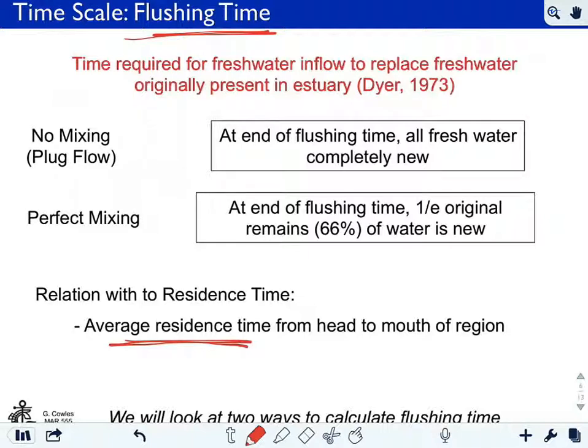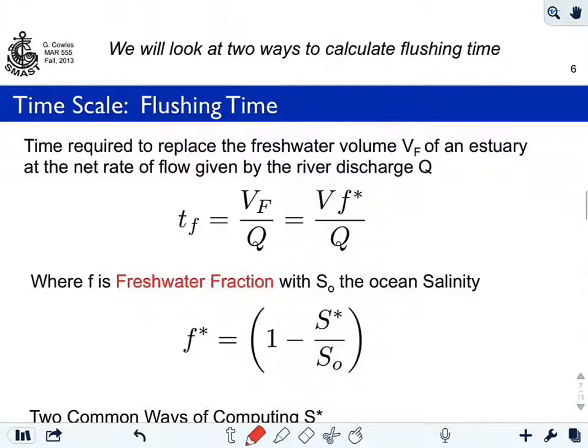So these two quantities are related. How do we estimate this flushing time? One definition is the second one which we're going to focus on, this idea of perfect mixing. At the end of the flushing time you have 1 over e, where e is 2.71. The original water remains, and 60%, two-thirds of it is new, roughly two-thirds, or 1 minus 1 over e.